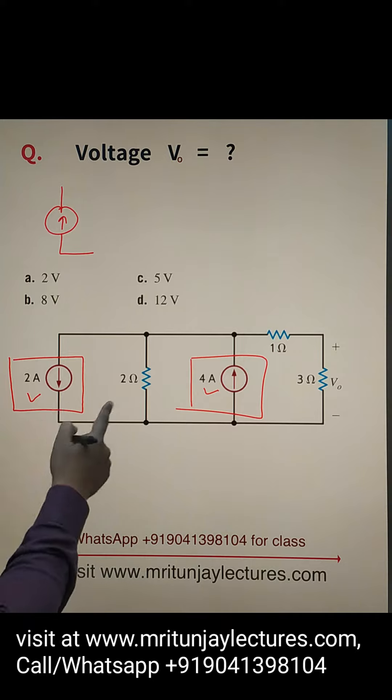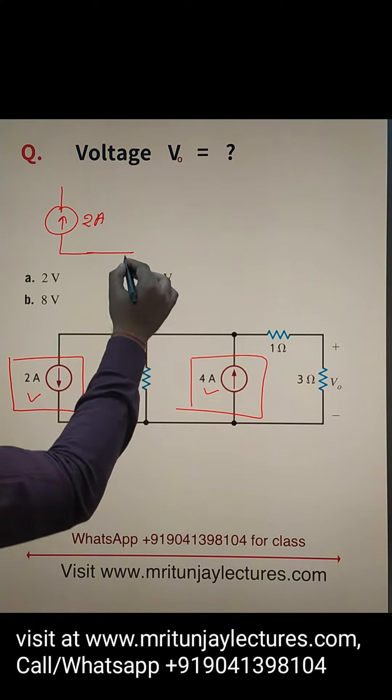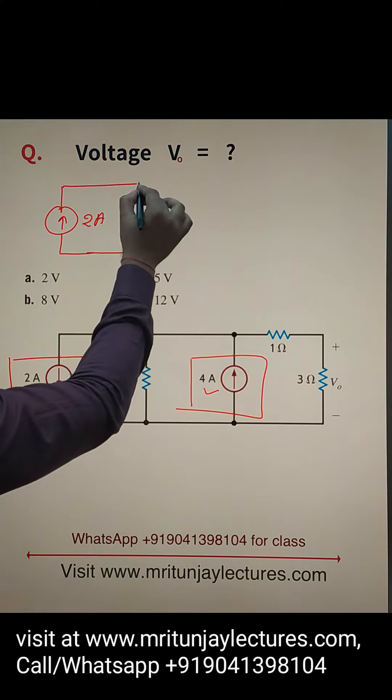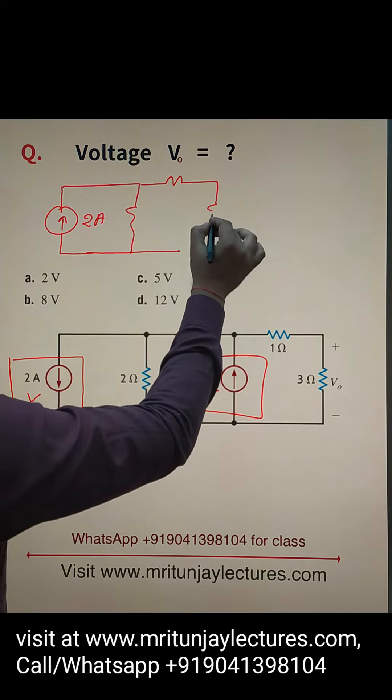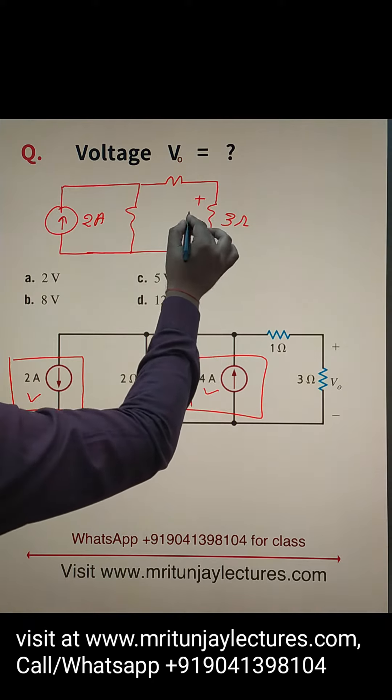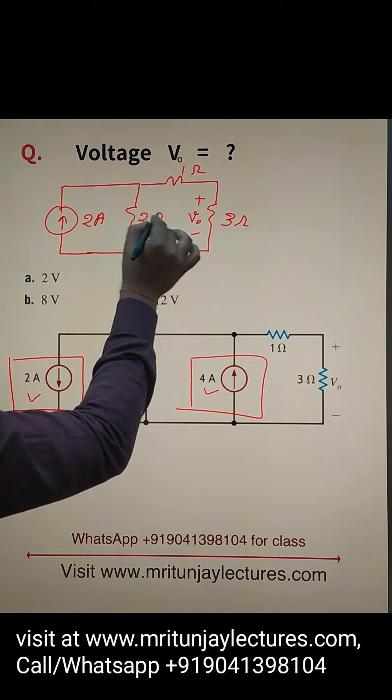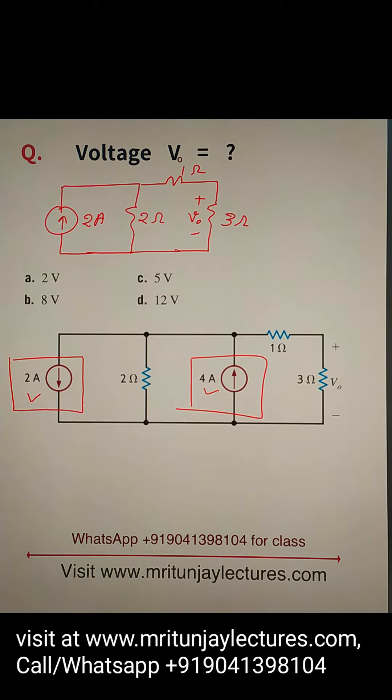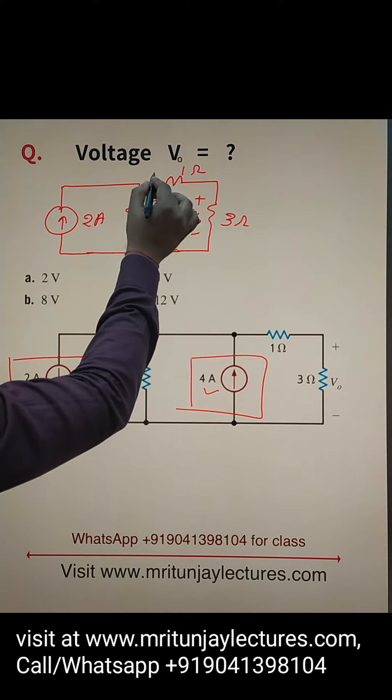So net current direction upward is 2 ampere. After that, there is 2 ohm resistance, here 1 ohm, and that one is 3 ohm. That is V₀, and that one is 1 ohm and 2 ohm. If you correctly apply current division rule here, we have i1 and i2.